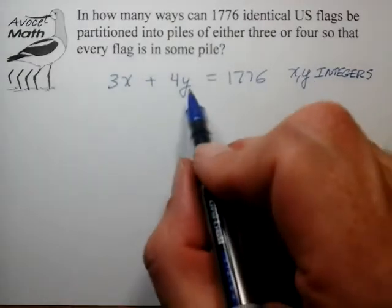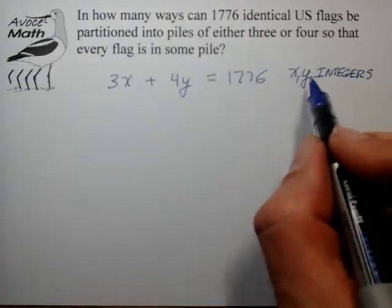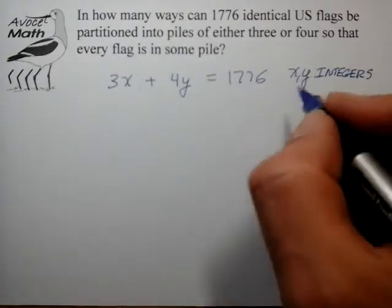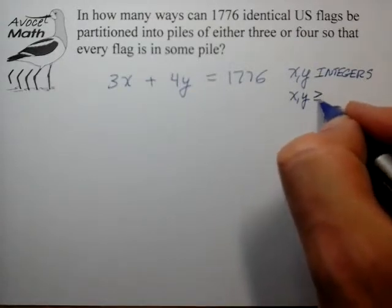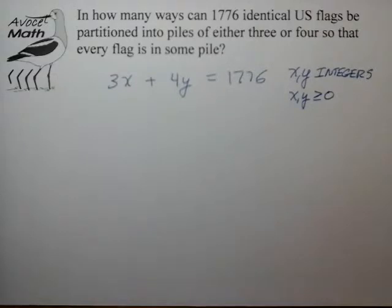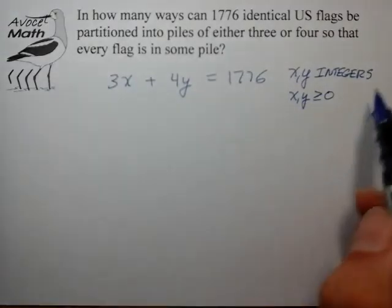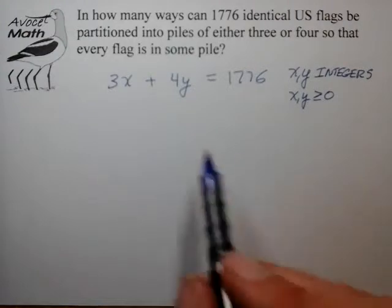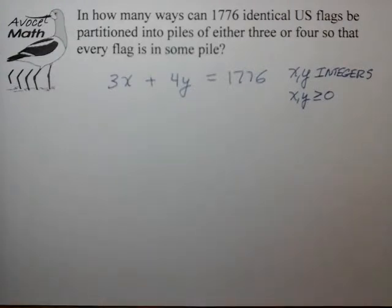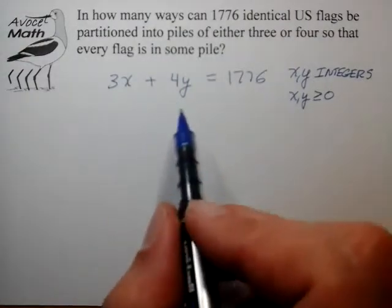In this case, we're allowing for x and y to be 0 but not negative, so we're looking for x and y greater than or equal to 0. Once we've done this, this is essentially all the heavy lifting in this type of problem. The rest is pretty much just our standard routine for solving these types of linear two-variable Diophantine equations.